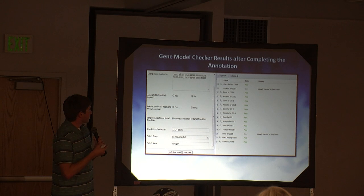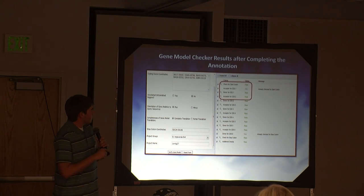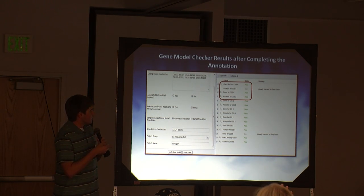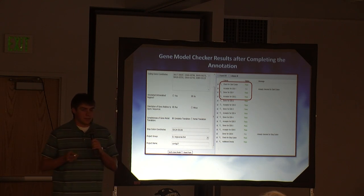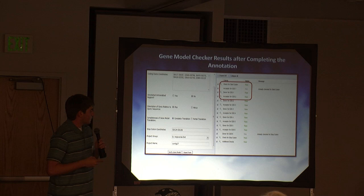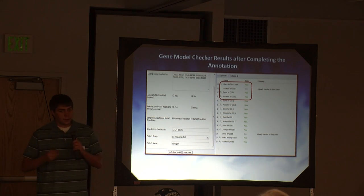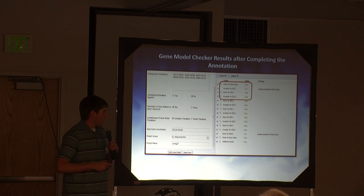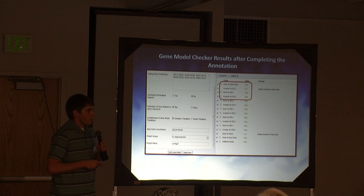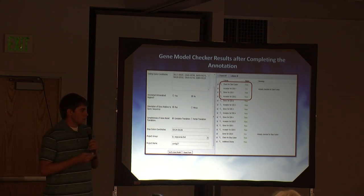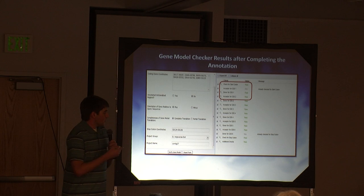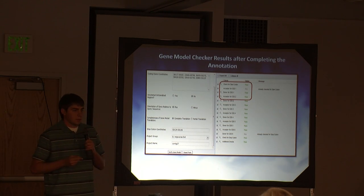We ran it through the gene model checker, entering all the coordinates of each exon and the stop codon. The parts pertinent to the first exon all passed: the start codon, the GT sequence of the first exon, and the AG acceptor site of the second exon. The phasing was correct — the first exon was phase one and the second exon was phase two, so everything lined up. This gives us a very reliable gene model based simply on the gene predictors, and it's a great example of why human annotators are needed rather than relying solely on computer programs, since there are places where the programming has very little information to work with.